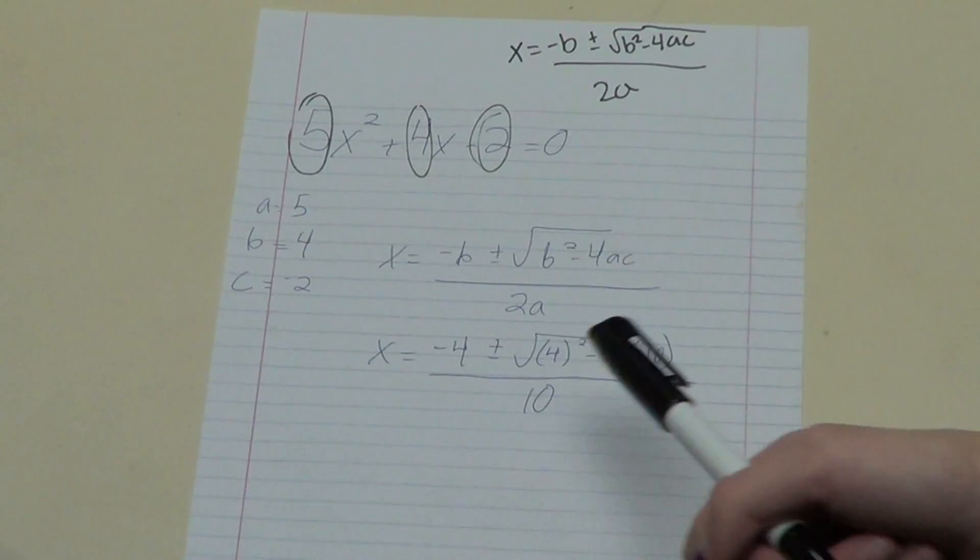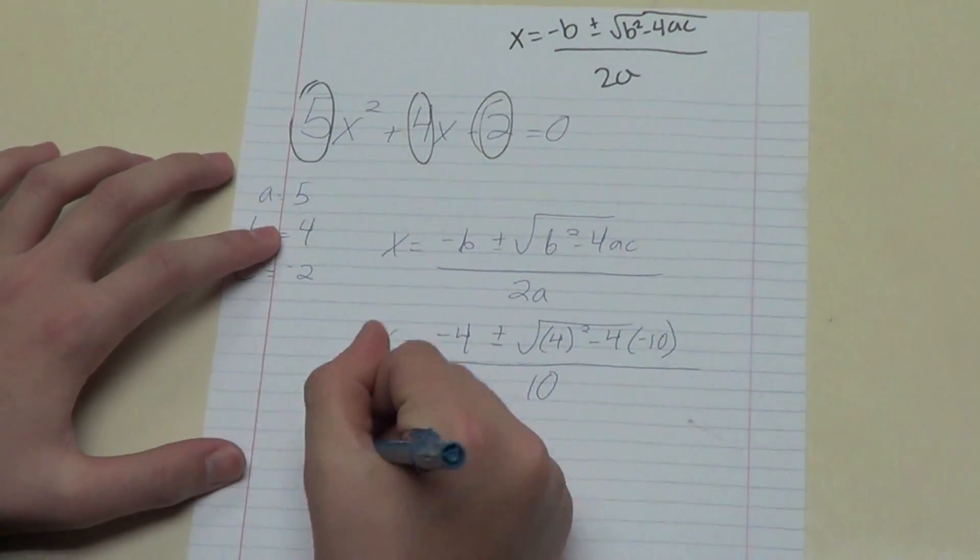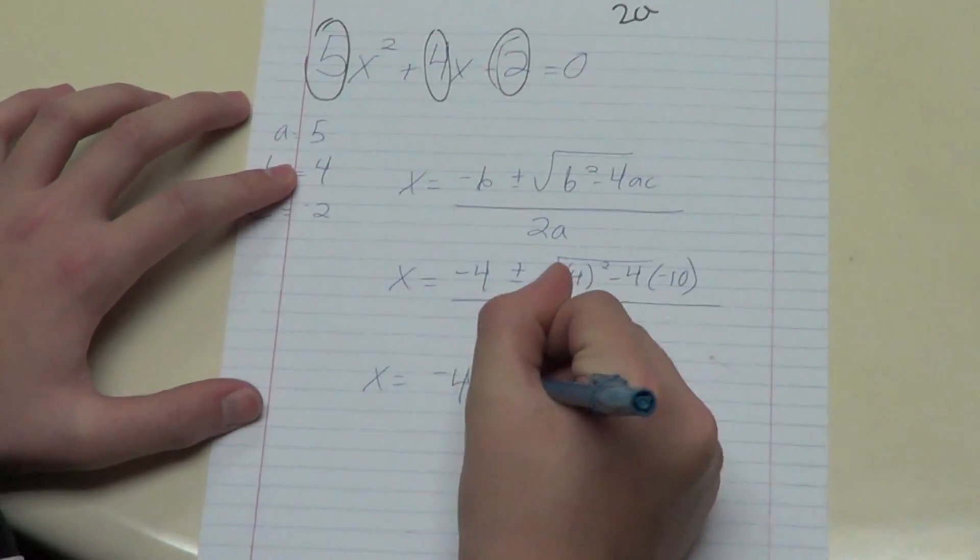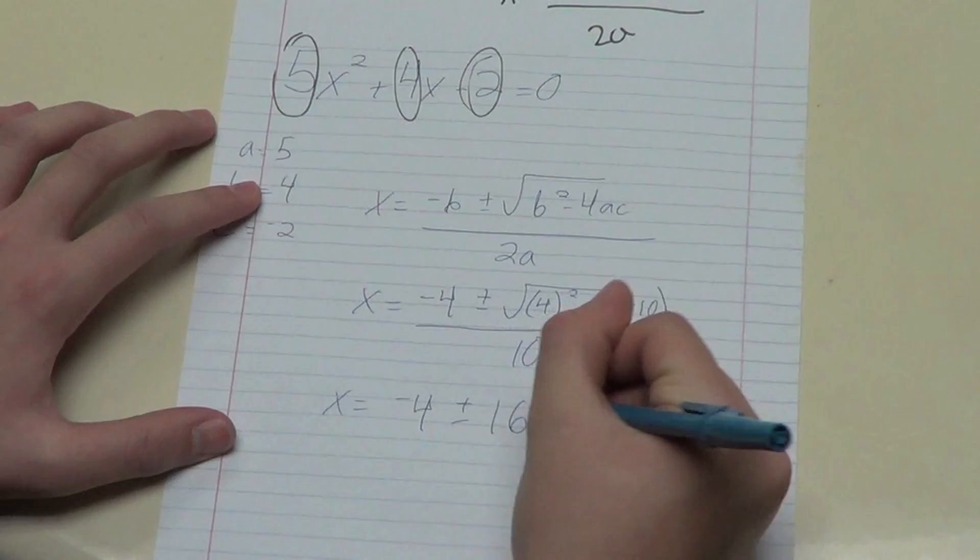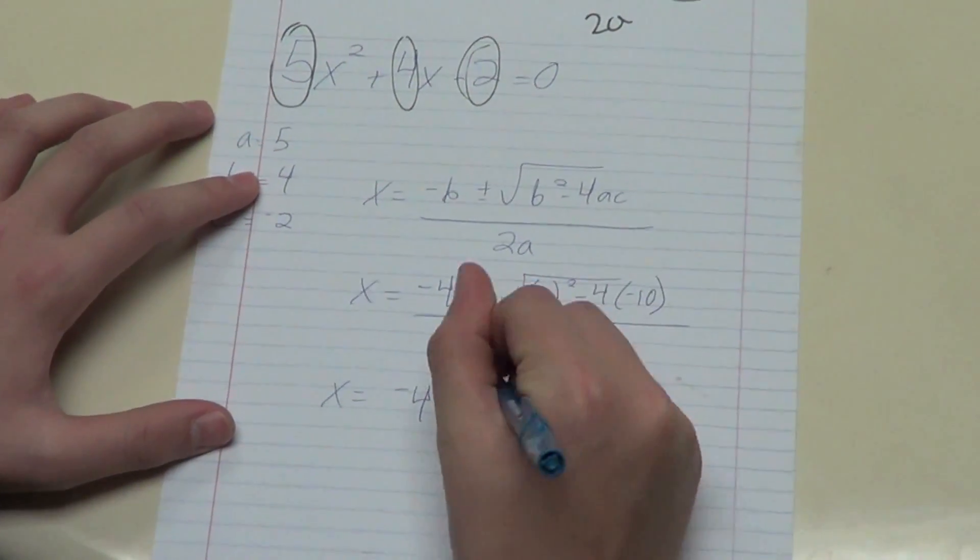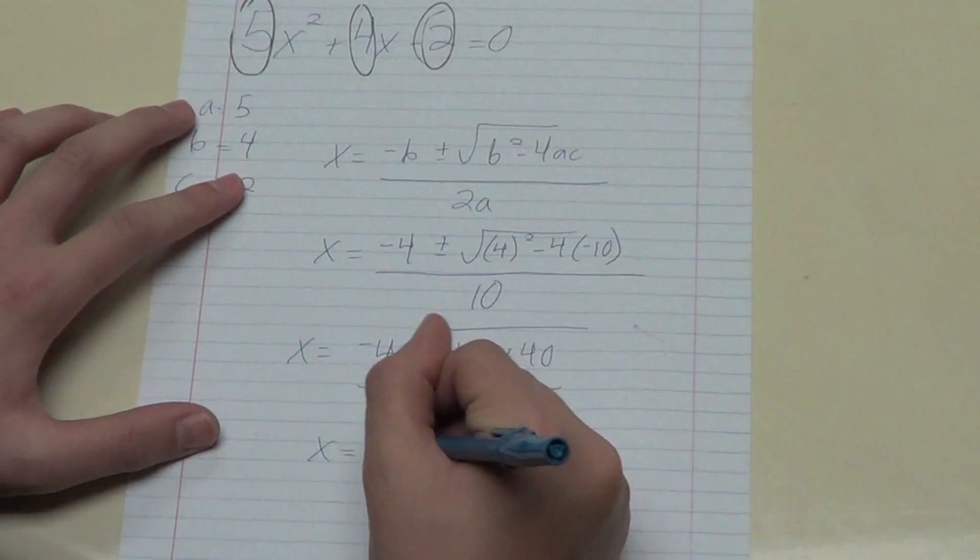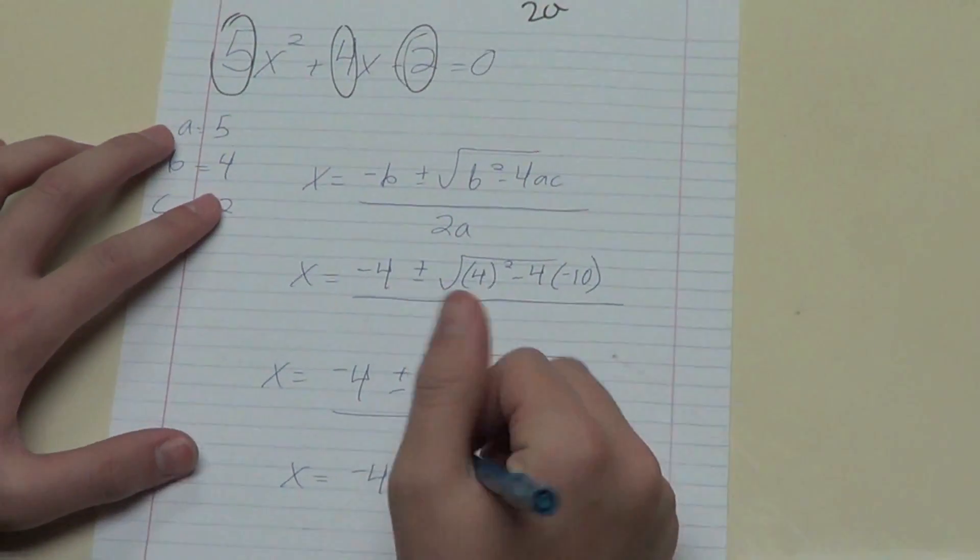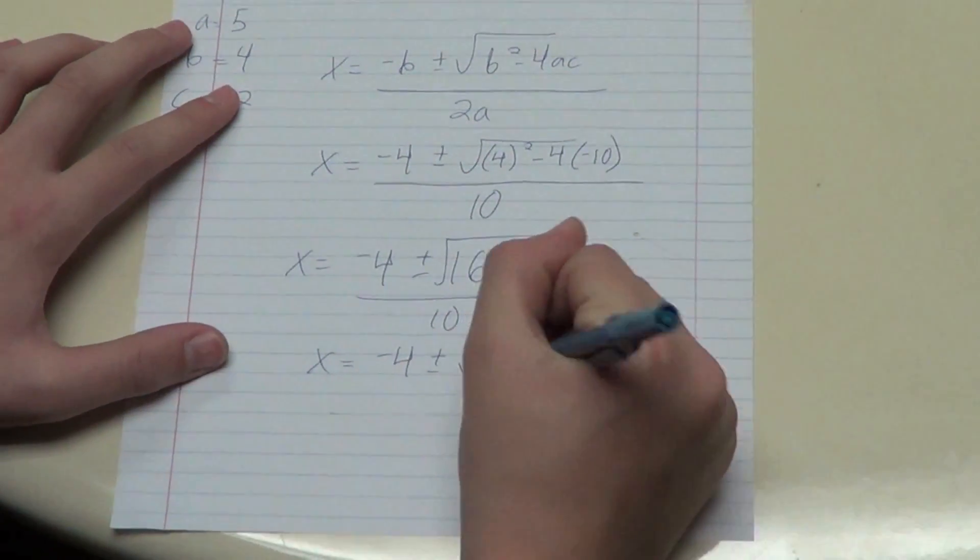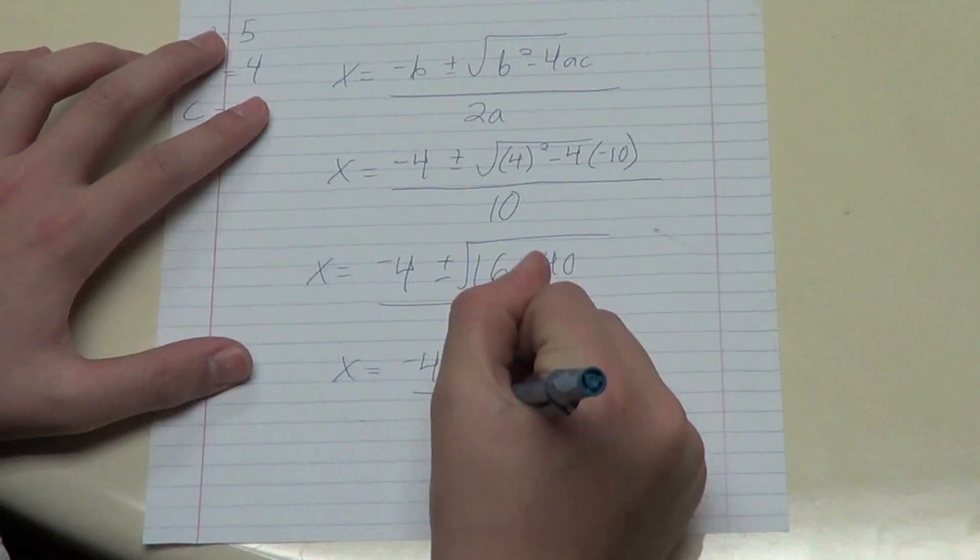Good job. Now continue. X equals negative 4 plus or minus 16 plus 40 over 10. X equals negative 4 plus or minus rad 56 all over 10. Now what?